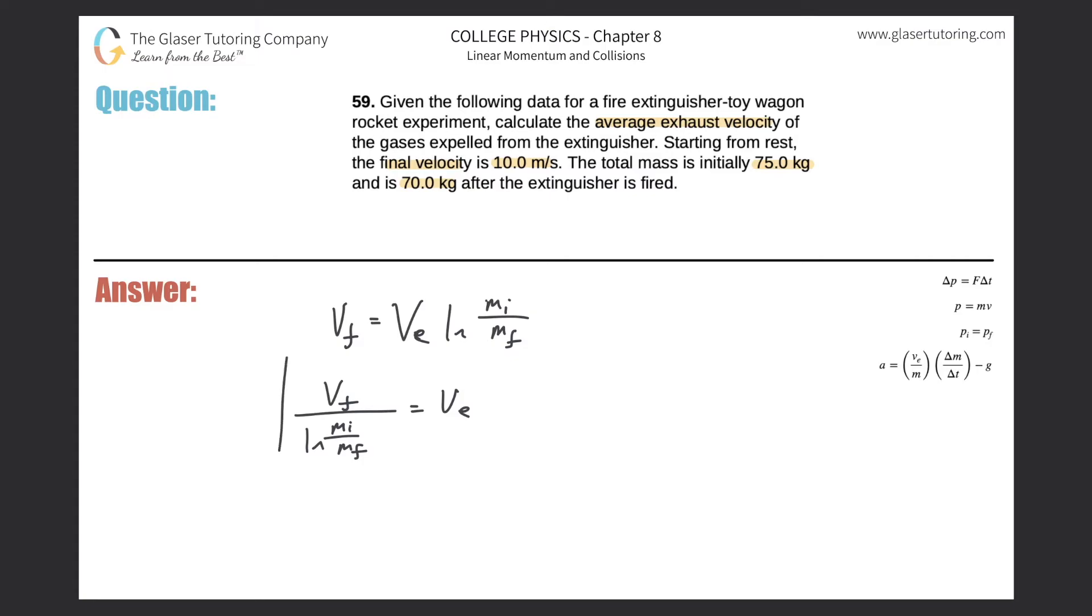Let's just now plug in the values. Okay. So we got V sub E will equal the final velocity 10 meters per second, it told us, divided by the natural log of the initial mass, which was 75 kilograms, divided by the final, which is 70.